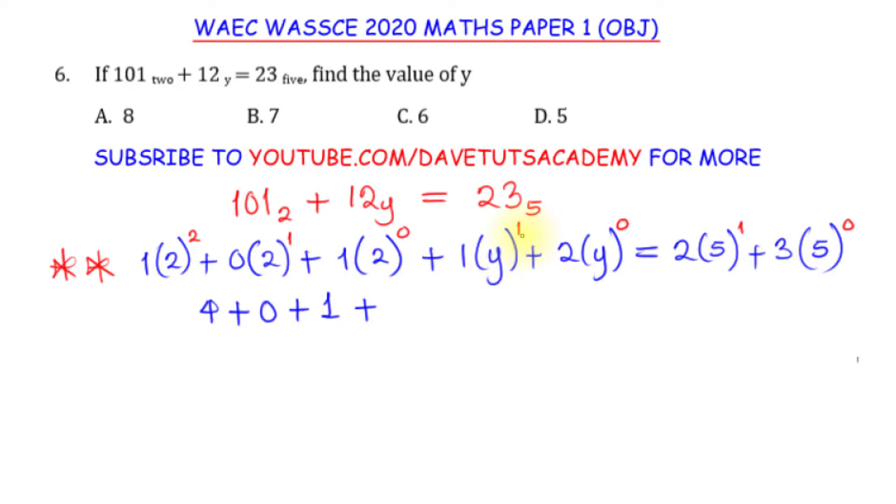Plus y raised to power 1 is y, y times 1, that is y, plus, like I said before, any number raised to power 0 would be 1, so y raised to power 0 is 1, 1 times 2 is 2.